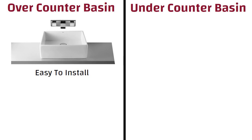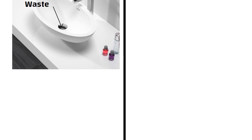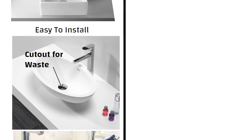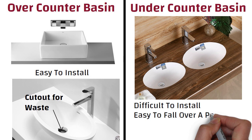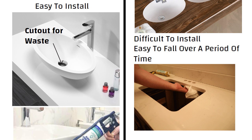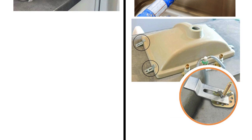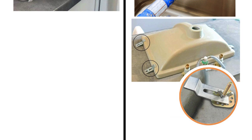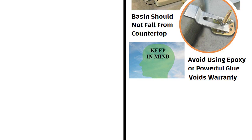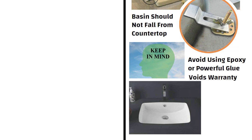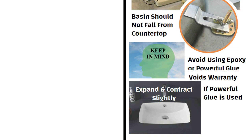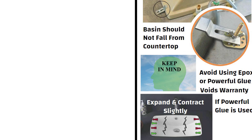Installation. Over counter basin is easy to install. Just make a cut out for a waste in the counter top, place the basin and seal it with the help of silicon sealant. Whereas under counter basin is difficult to install and easy to fall over a period of time. Cut outs are made in the counter top as per the size of the tap and basin hole. Silicon sealant is applied between the sink and counter top, and metal clips or brackets are fixed so that the basin does not fall. Avoid using epoxy or powerful glue as this voids most manufacturers' warranties, because ceramic basins expand and contract slightly as cold or hot water runs through them, and powerful glue does not allow this, potentially causing cracks.